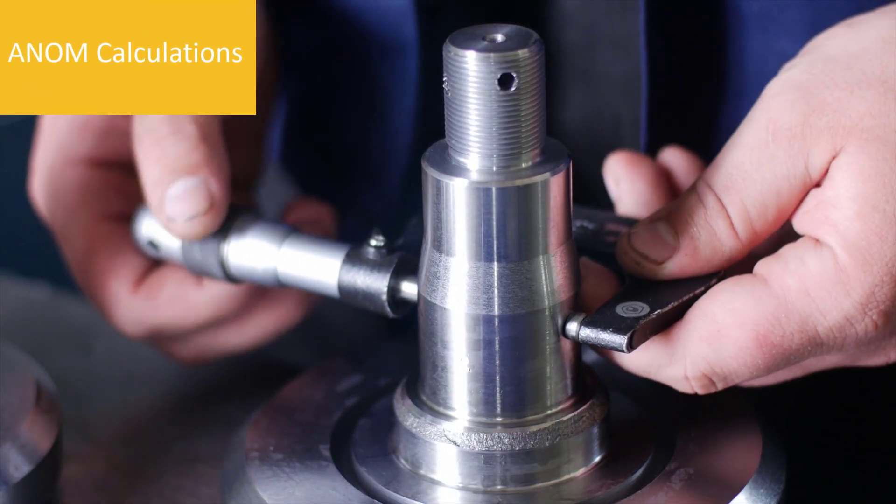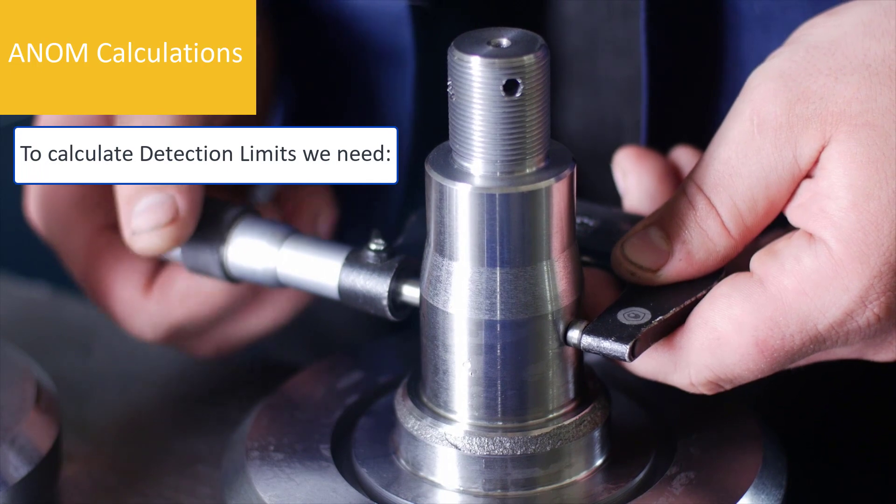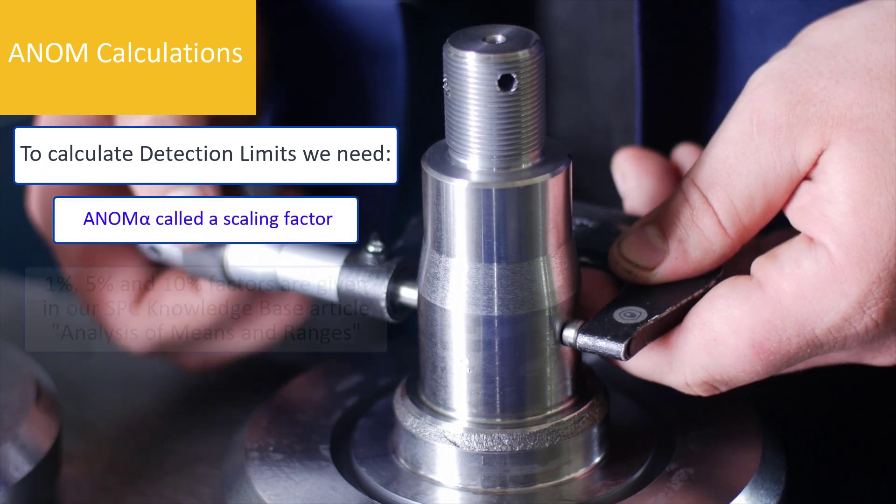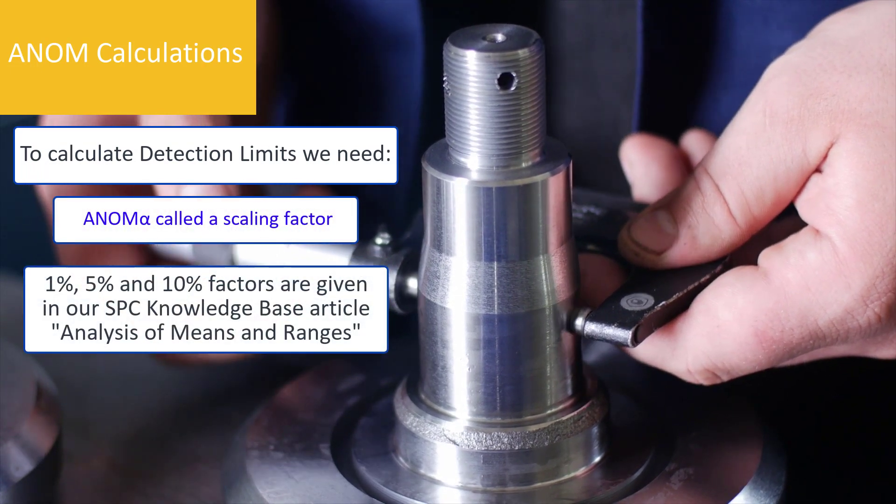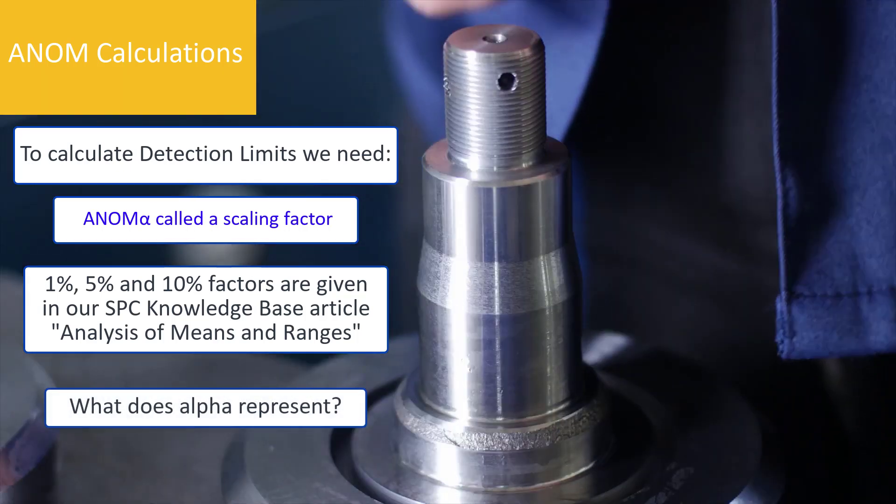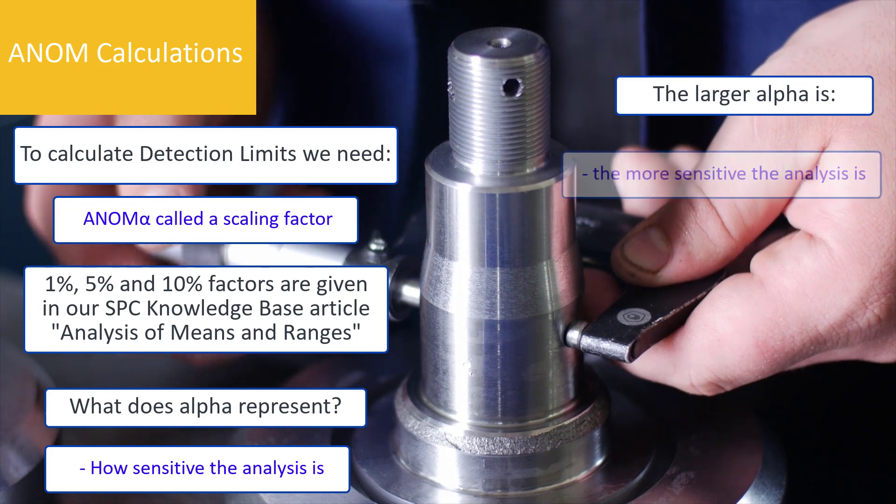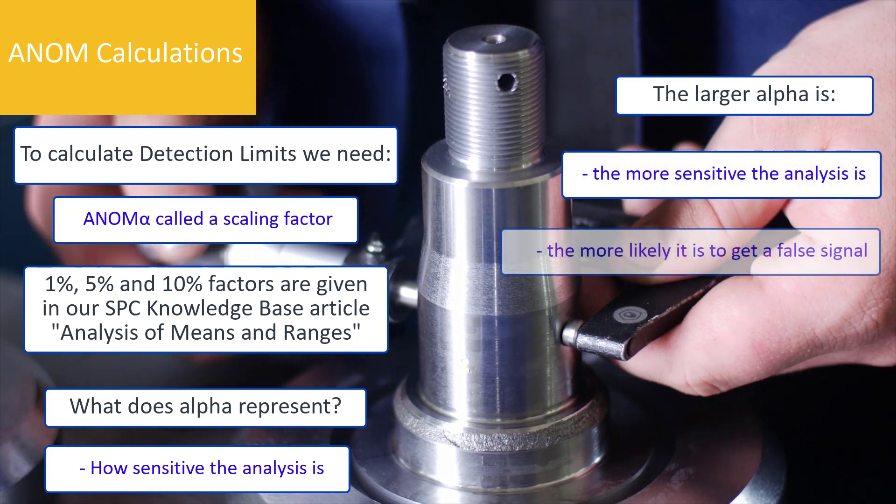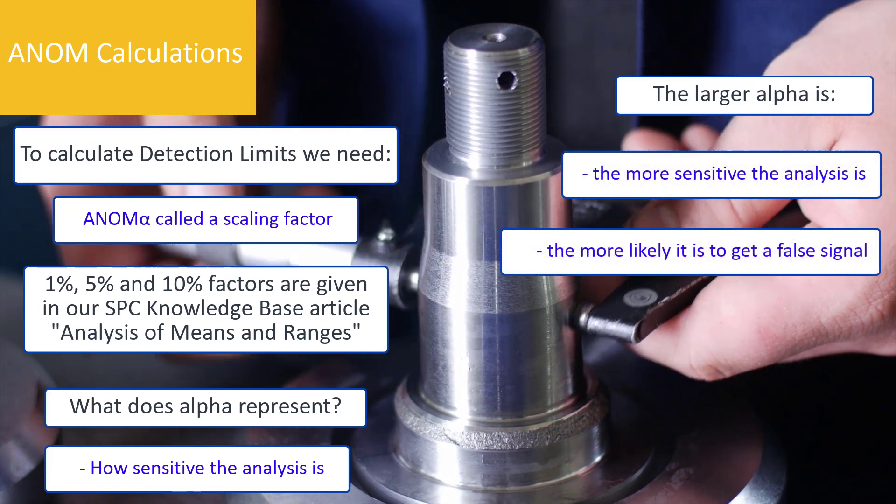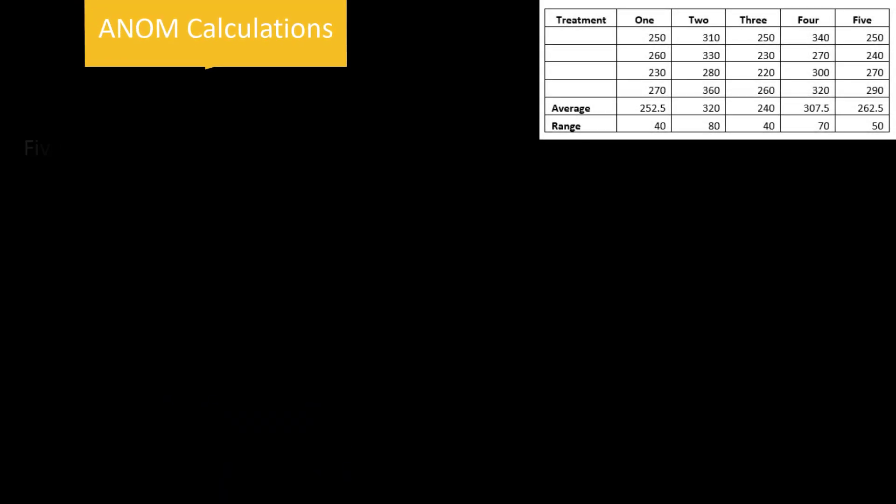Let's see how the calculations actually work. You have to have the scaling factor. That scaling factor you can get from the SPC knowledge-based article analysis of means and ranges. And what does that alpha represent? It's 1, 5, or 10 percent. It represents how sensitive the analysis is. The larger the alpha, the more sensitive the analysis is. But also, the more likely it is to give a false signal.